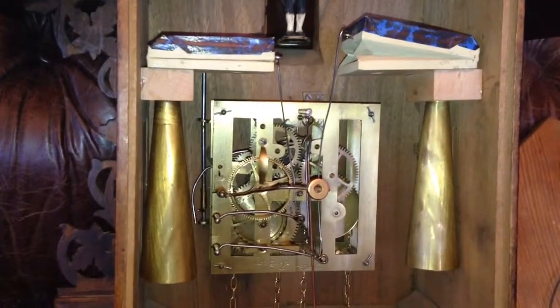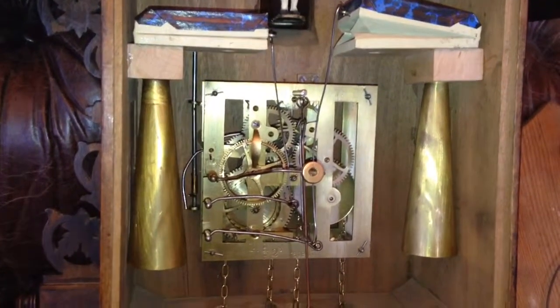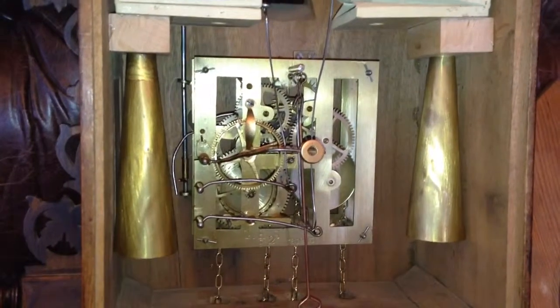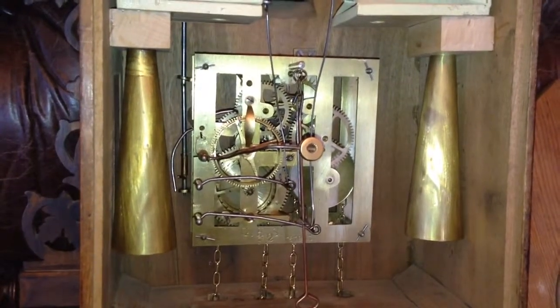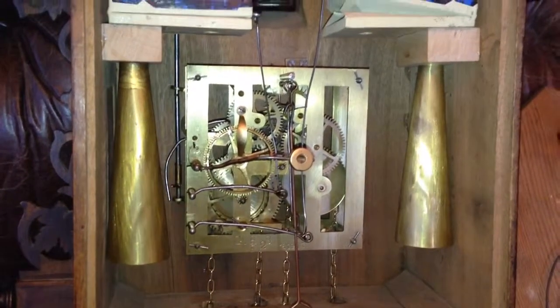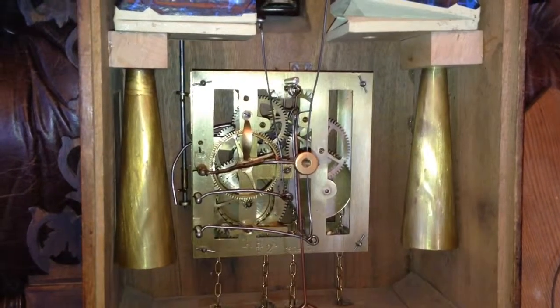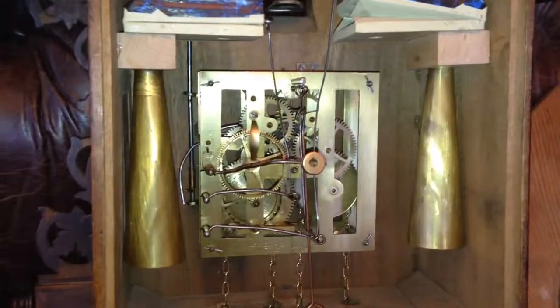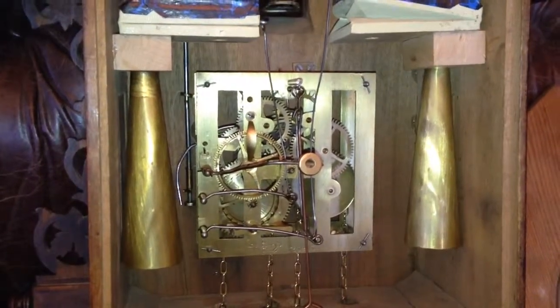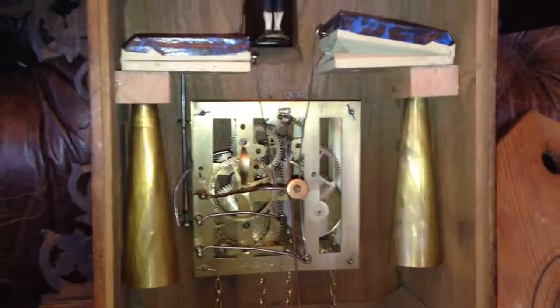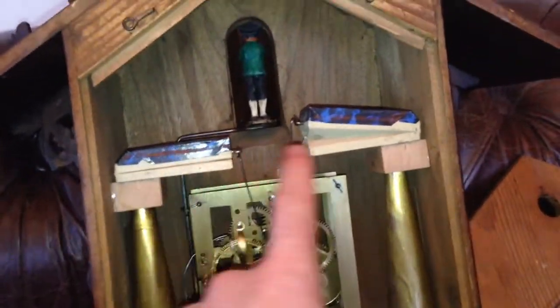This clock uses essentially an oversized cuckoo clock movement. You can see it has two lift levers and a hammer for the strike. Instead of the clock operating bellows on wooden pipes to mimic the call of a cuckoo, it has these two reed assemblies here.